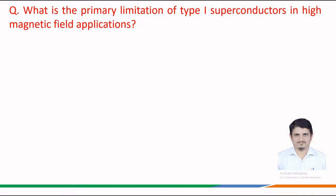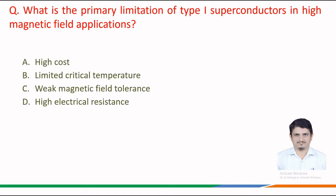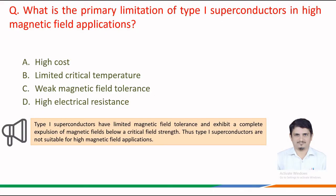Next question: what is the primary limitation of type 1 superconductors in high magnetic field applications? The given options are: option a, high cost; option b, limited critical temperature; option c, weak magnetic field tolerance; and option d, high electrical resistance.